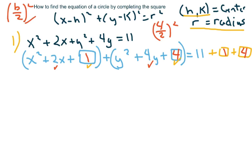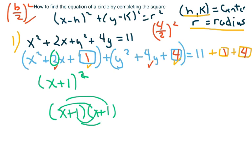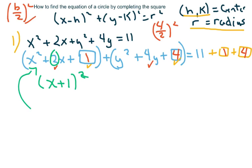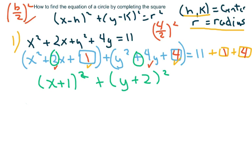Now I write this in simpler form. This is a perfect square trinomial, so this would be x plus — you take half of 2, which is 1 — squared. What this means is when I have x plus 1 times x plus 1 and factor it out, I get that. For the y portion, it's going to be y plus — take half of 4, which is 2 — squared. If you wrote that out twice and pulled it out, you would get y squared plus 4y plus 4. I add everything up and get 16 on the right side.